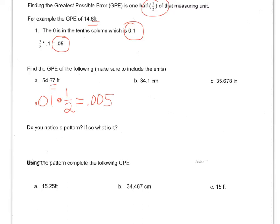Taking a look at the next example, the 1 here is in the tenths place, which we write 0.1. And then we're going to multiply that by one half. So 0.1 times 0.5, and you get 0.05.